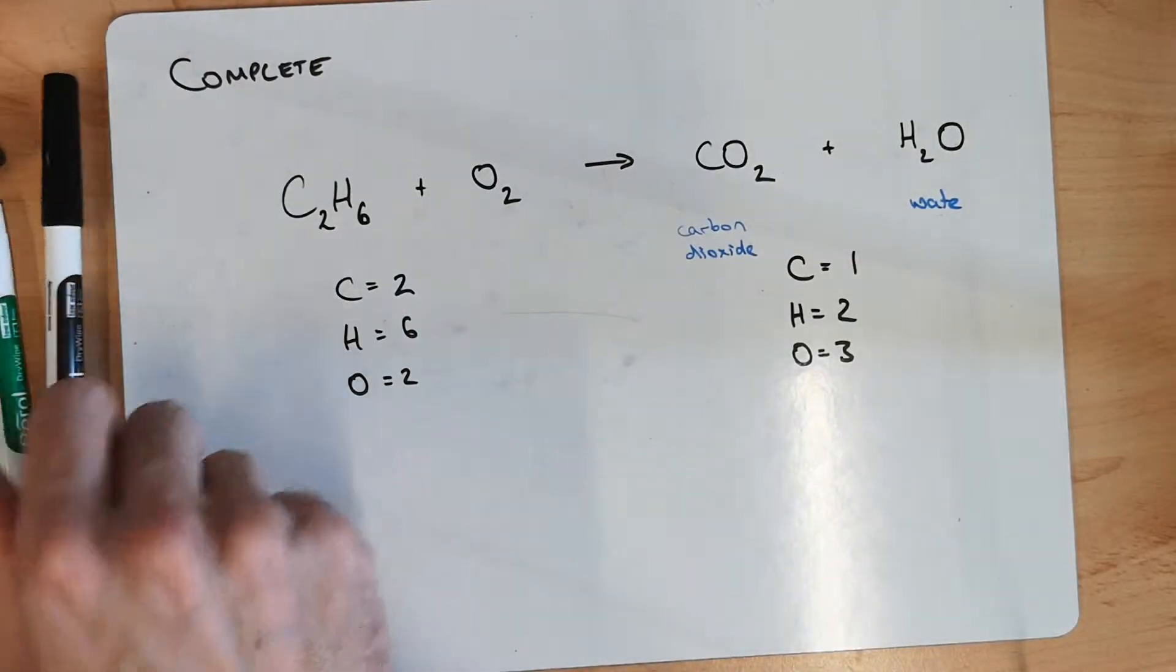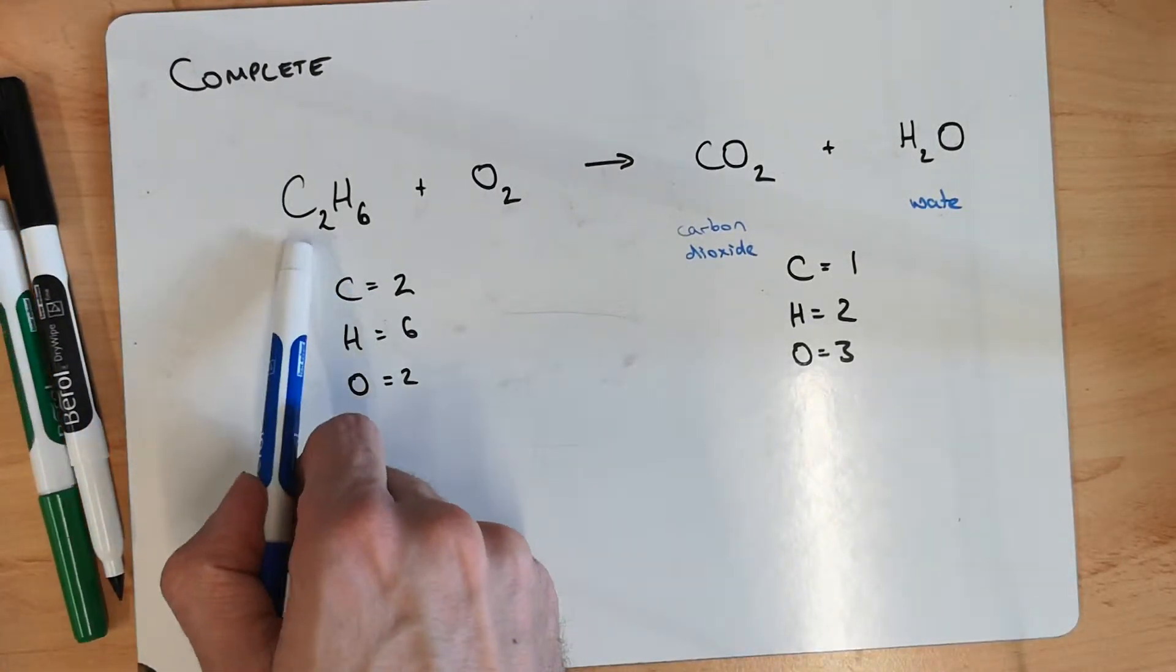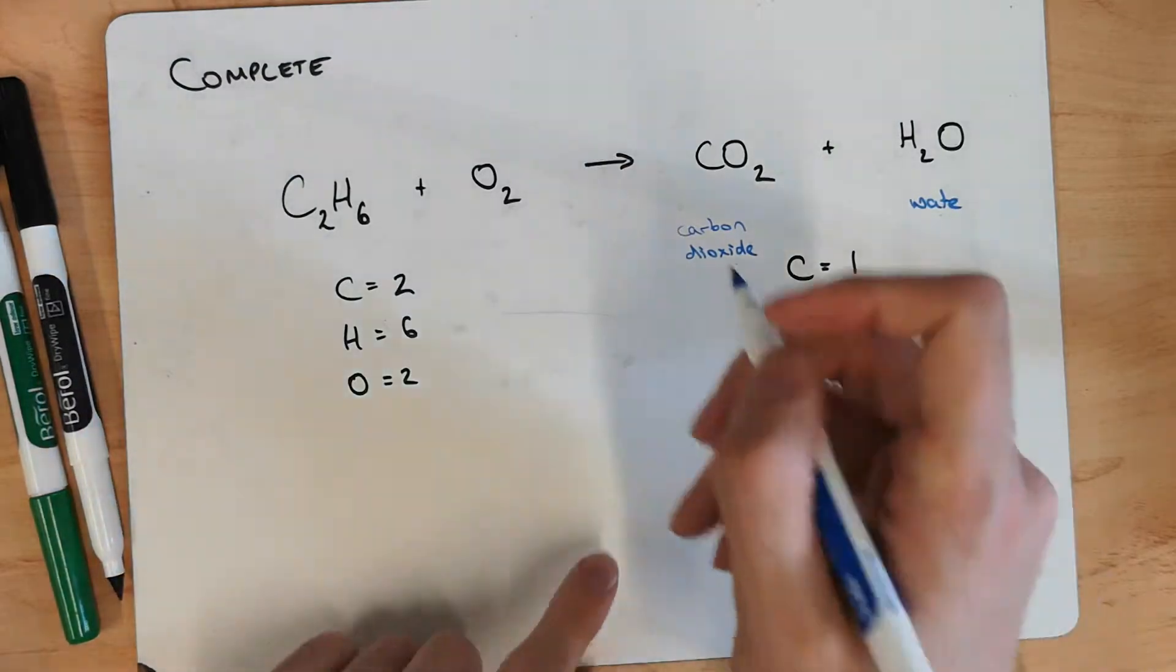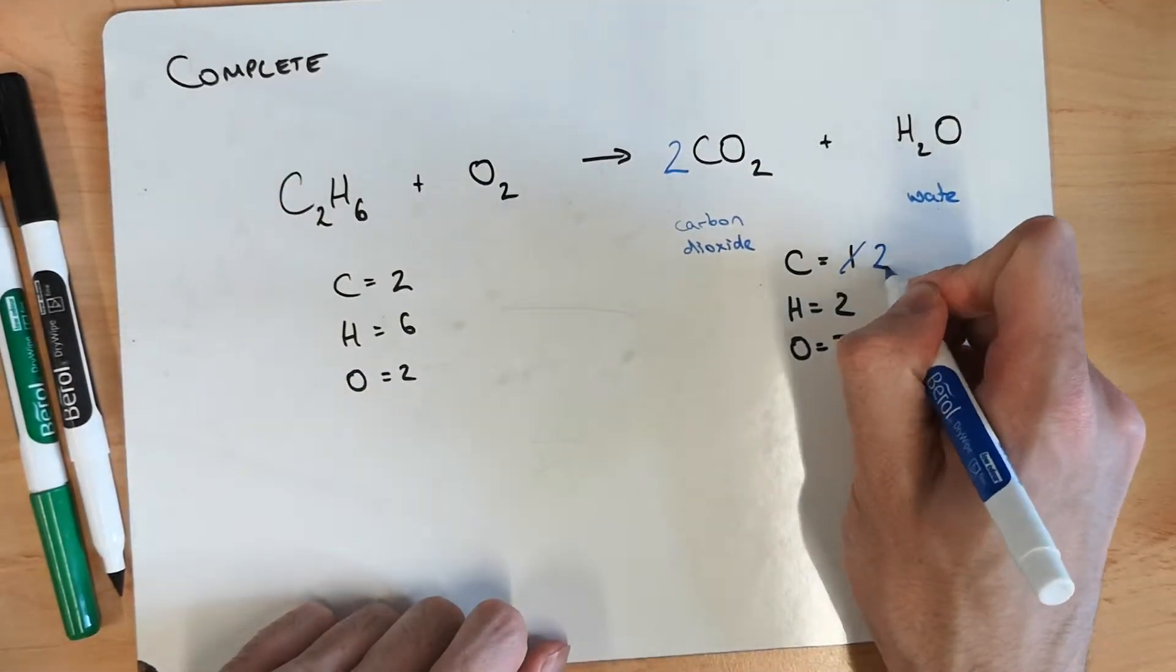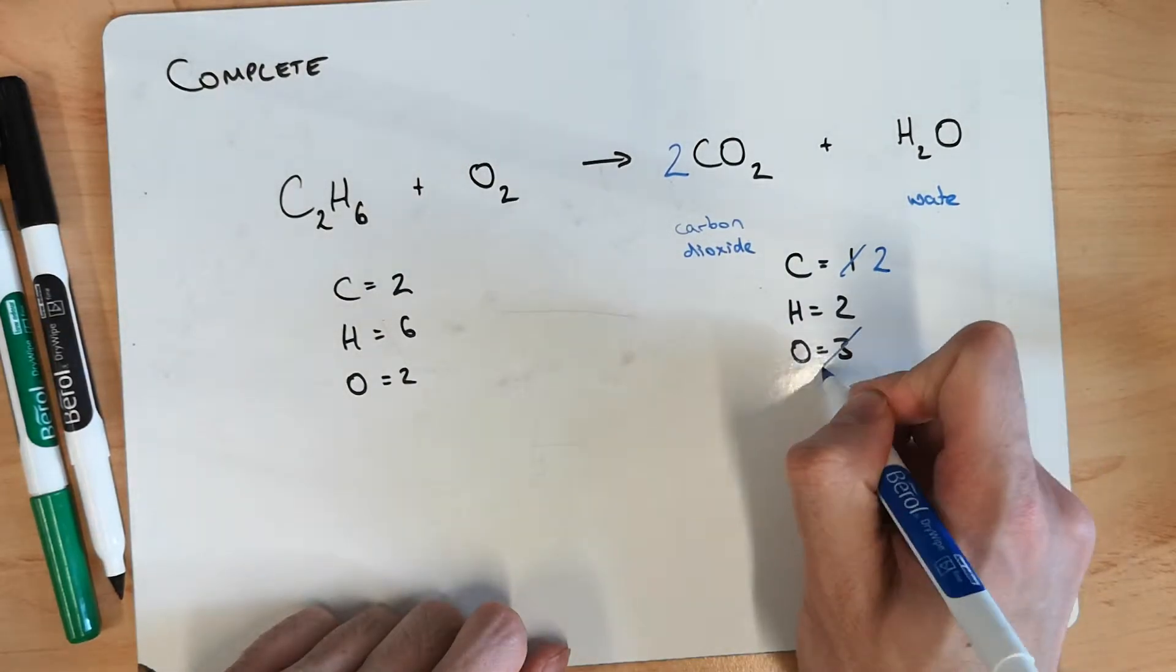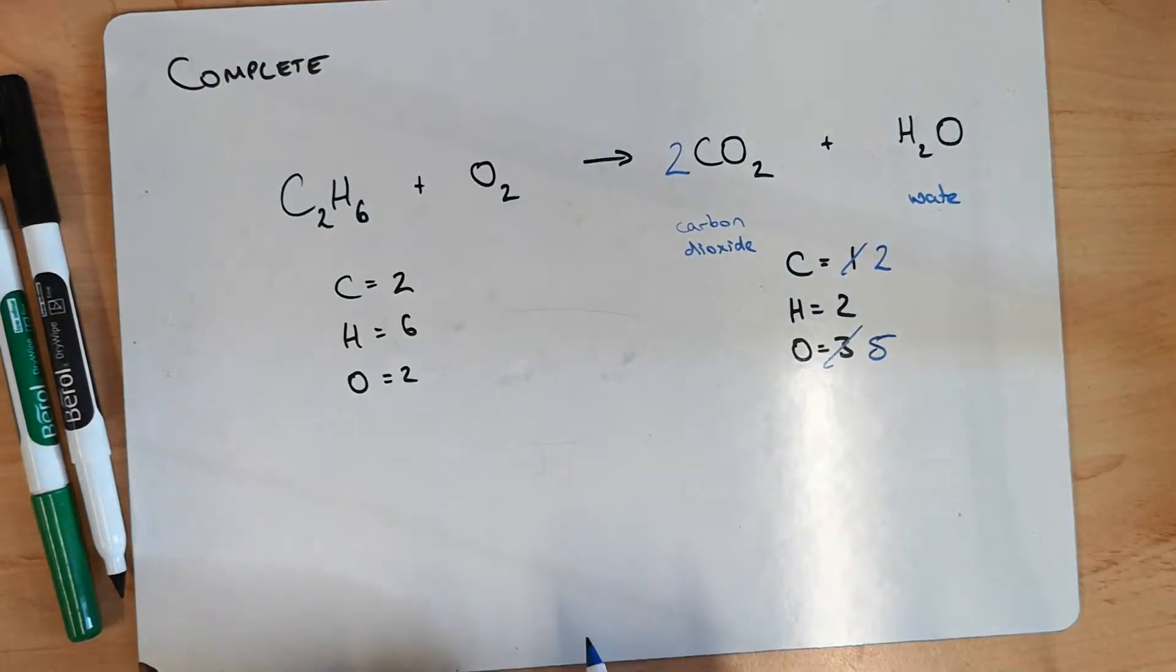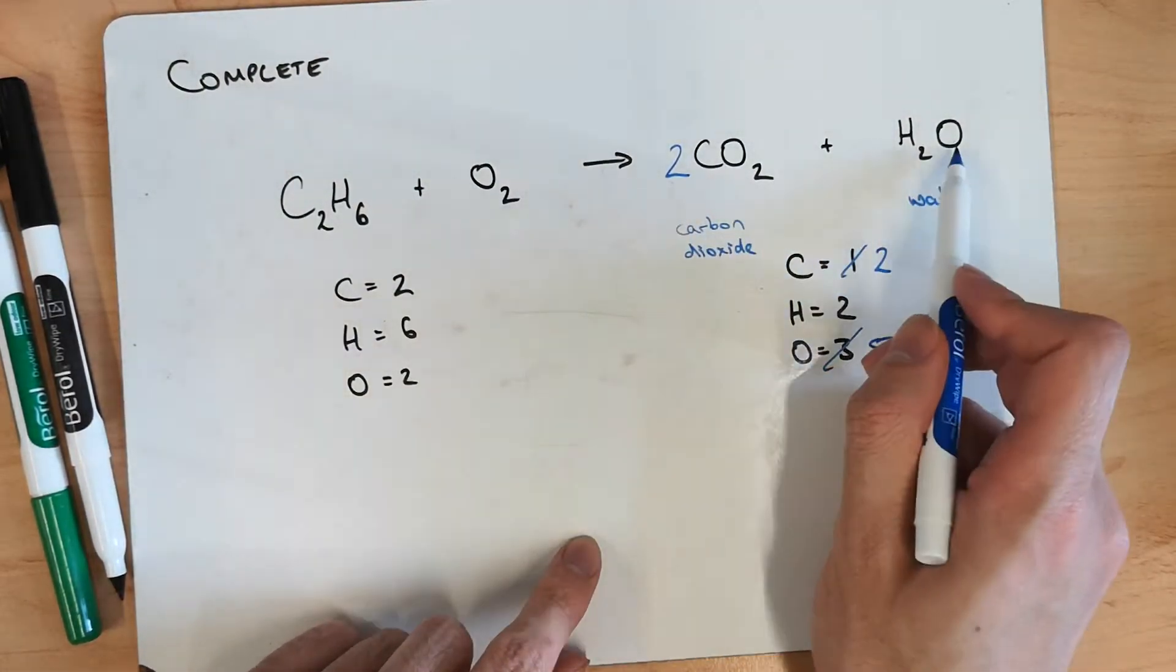So I'll start with carbons. So I've got two on this side. So I need to get two here. So I'm going to put a two in front of there. Changes my carbons to two. So they now match. And I'm up to five oxygens. Four here. And one there.